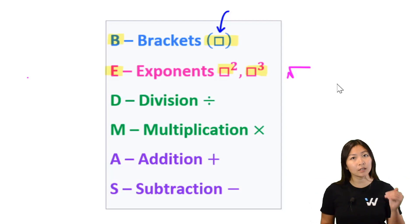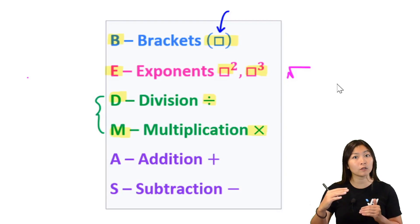Once you're done with brackets and you're done with exponents, now it's down to division and multiplication. So D stands for division, M stands for multiplication. Now don't let this trick you. Division doesn't always come before multiplication. Sometimes multiplication comes before division.